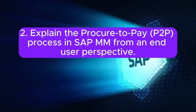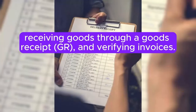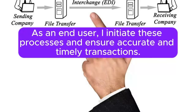Question 2: Explain the procure-to-pay (P2P) process in SAP MM from an end-user perspective. Answer: The procure-to-pay process involves creating a purchase requisition (PR), converting it into a purchase order (PO), receiving goods through a goods receipt (GR), and verifying invoices. As an end-user, I initiate these processes and ensure accurate and timely transactions.